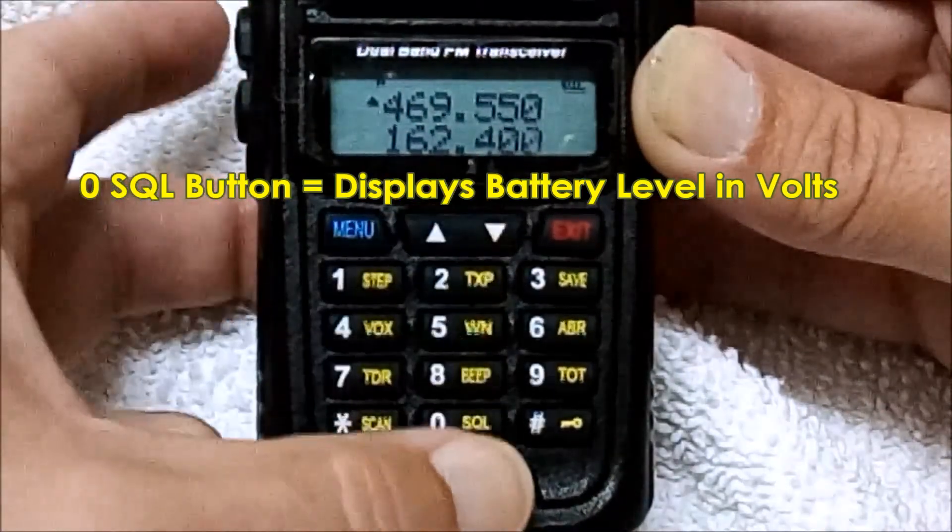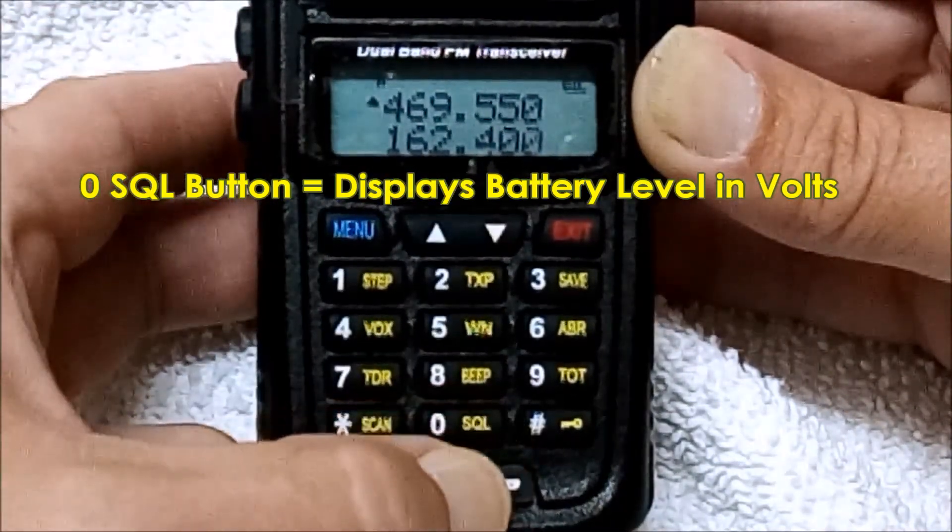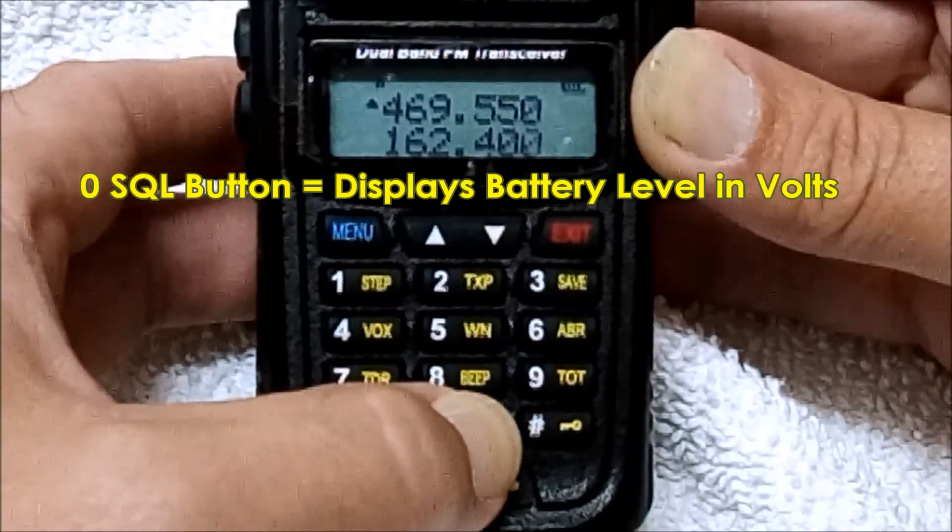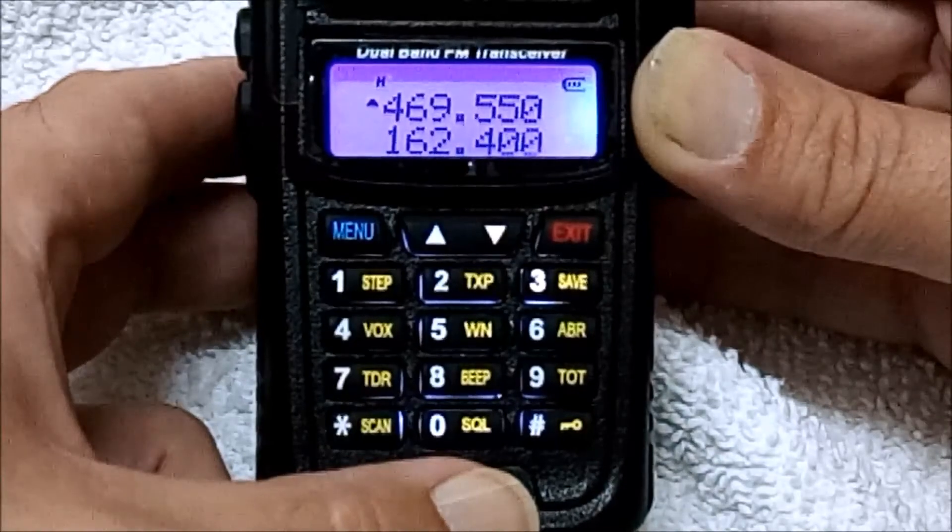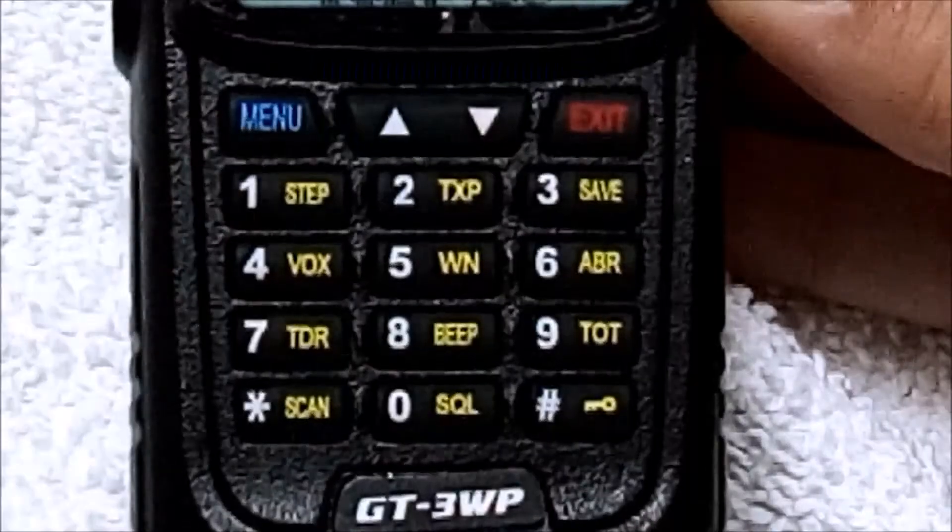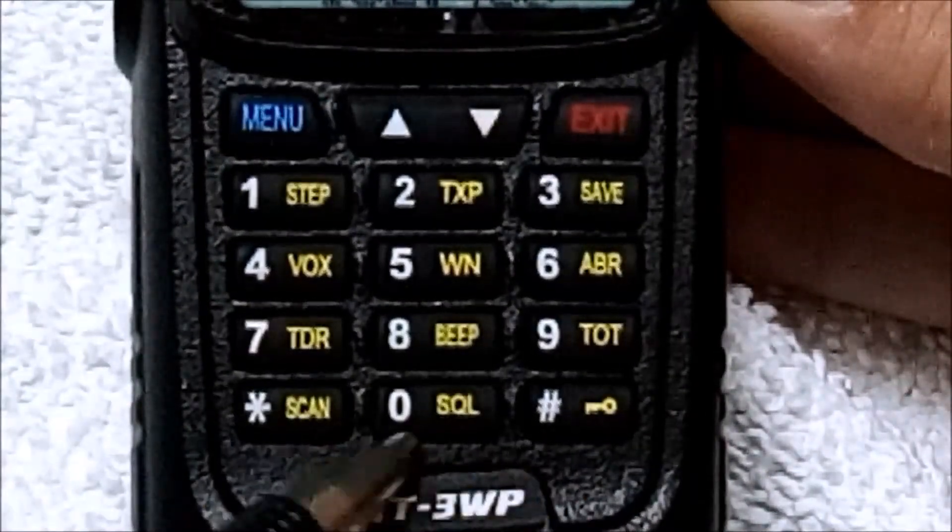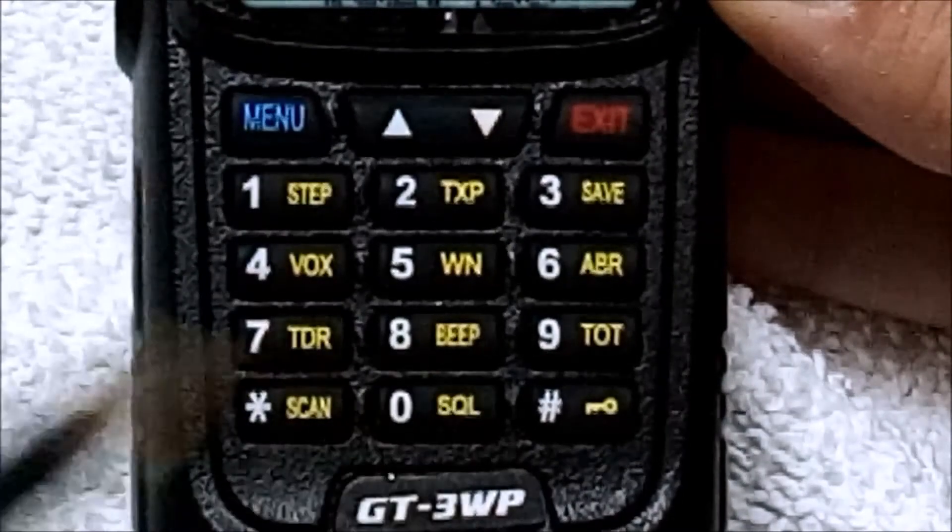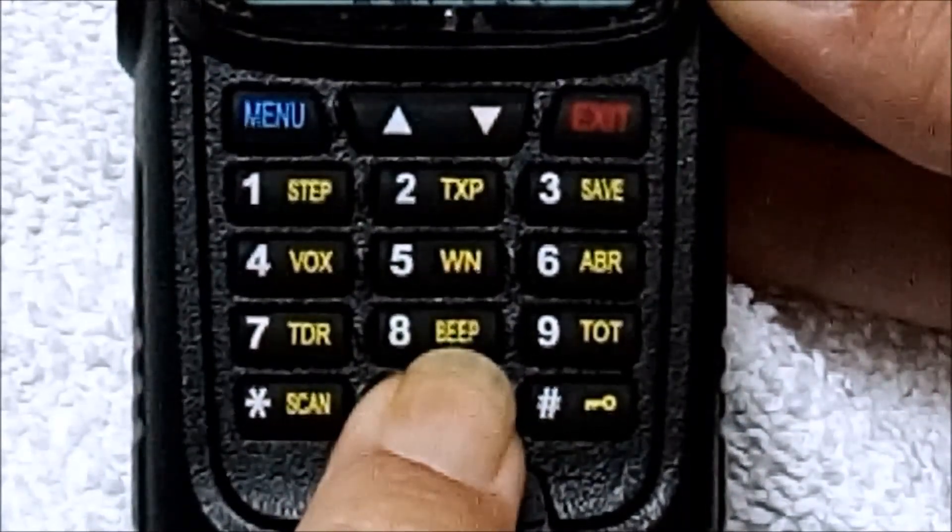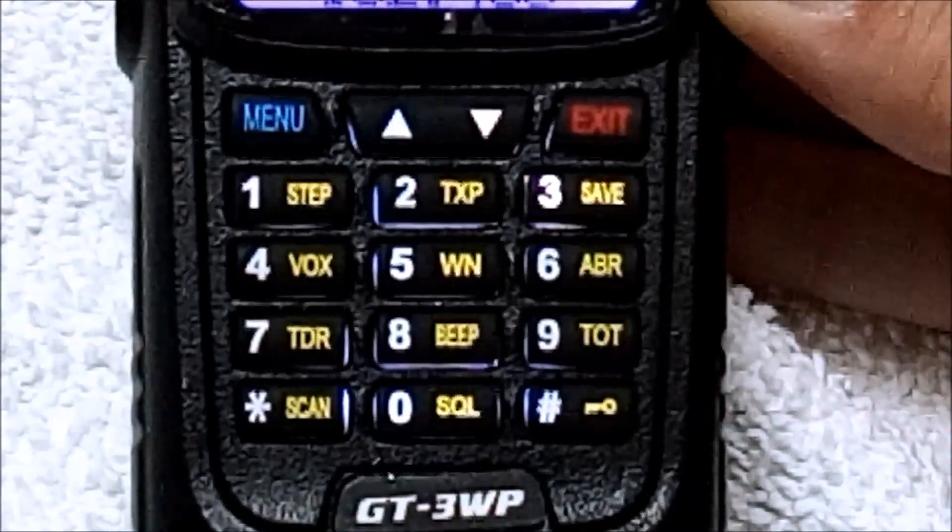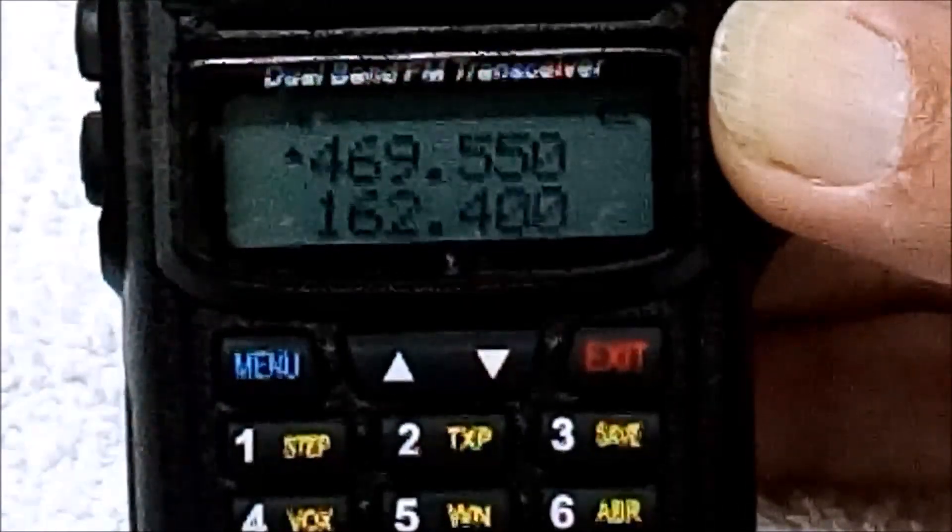So we'll do that - 7.9 volts. And we'll show a close-up of the keypad. Again, it's the zero SQL button. Alright, we'll show a close-up of the display when I push the zero button.